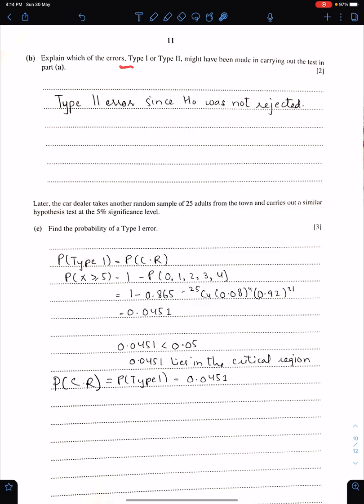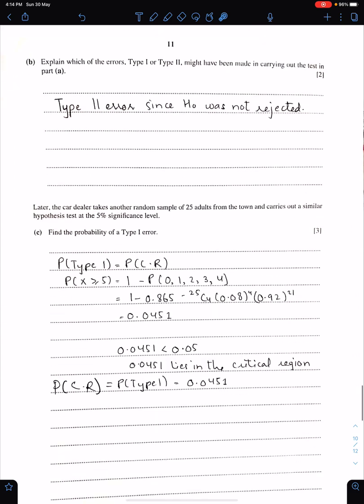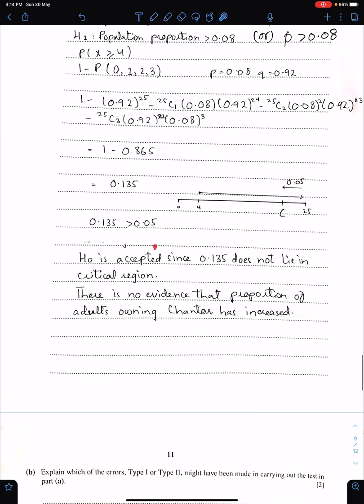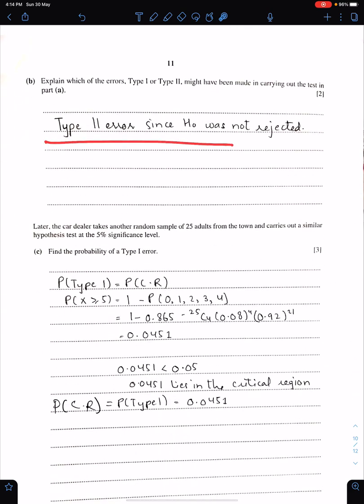Explain which of the errors Type 1 or Type 2 might have been made in carrying out the test in Part A. Since H0 was accepted, therefore Type 2 error might have been made. Type 2 error, since H0 was not rejected. Or you can say H0 was accepted. So when we accept H0, then Type 2 error might have been made. Otherwise, when we reject H0, then Type 1 error might have been made. In this case, we accepted H0. Therefore, Type 2 error might have been made.